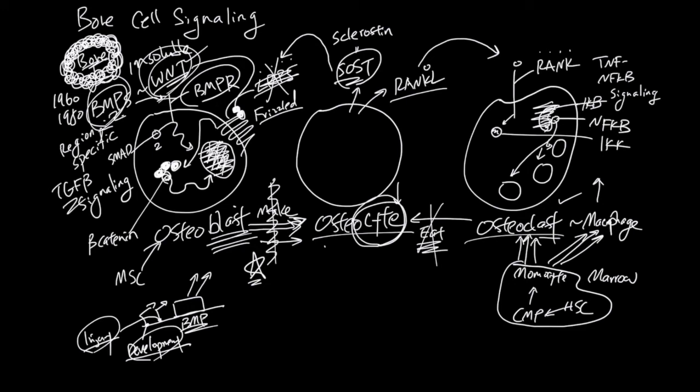So during this time, osteoblasts make this protein and release it, and it's called OPG. OPG stands for osteoprotegerin, and OPG is very similar to RANK in terms of their ability to bind to RANKL. The difference is that RANK stays on the osteoclasts and activates osteoclasts, but OPG is just floating around.